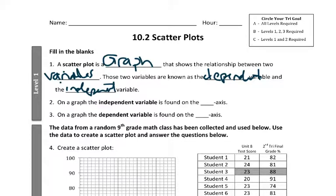So, on a graph, the independent variable is found on the x-axis. We've talked about that a lot in the past, especially when we were talking about domains and ranges. And then on a graph, the dependent variable is found on the y-axis.